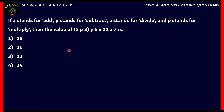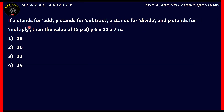Let's start off with a question from Mental Ability. Here's our first question: if X stands for Add, Y stands for Subtract, Z stands for Divide, and P stands for Multiply, and the value of (5P3)Y6 X21 Z7 is — the options are 18, 16, 12, or 24.